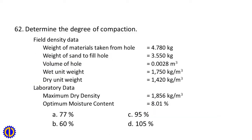Question 62. Determine the degree of compaction given the following field density data: weight of materials taken from hole = 4.780 kg, weight of sand to fill hole = 3.550 kg, volume of hole = 0.0028 m³, wet unit weight = 1.750 kg/m³, dry unit weight = 1.420 kg/m³. Laboratory data: maximum dry density = 1.856 kg/m³, optimum moisture content = 8.01%. A. 77%, B. 60%, C. 95%, D. 105%.